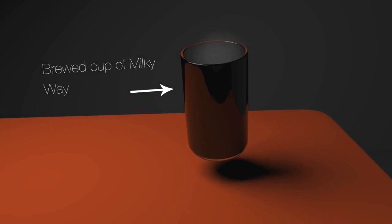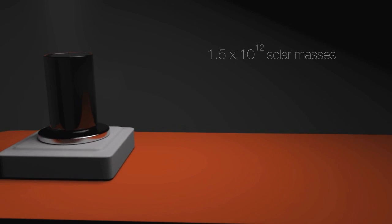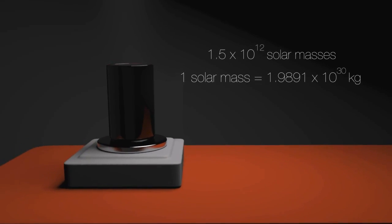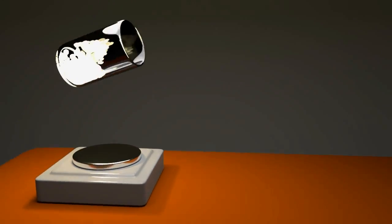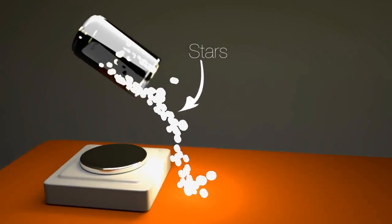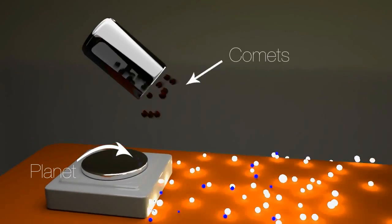Let me help you visualize this. So here I've got a freshly brewed cup of Milky Way from the Galactic Cafe. Let's weigh it shall we? Hmm, about 1.5 raised to 10 power 12 solar masses. Pretty hefty. Let us take out all this visible matter - the stars, the planets, the comets, dust, cool gas, heck even atoms.